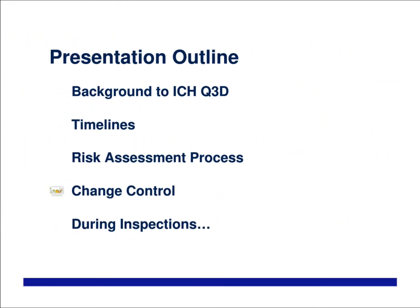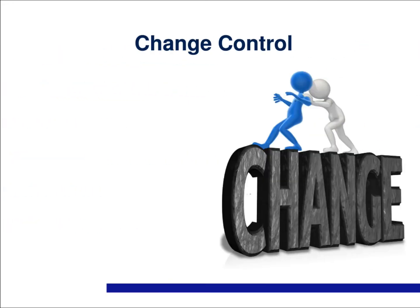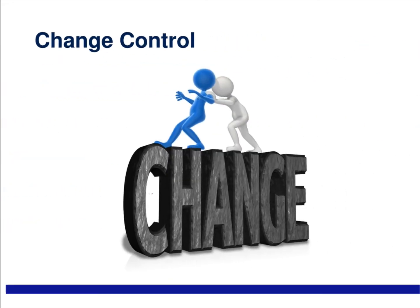We'll now look at change control. Once you've completed your risk assessments you need to consider the impact of any changes that you make — so that could be to excipients, synthetic routes, manufacturing plants, water systems, etc. You need to do this routinely as part of your change controls, and so it might be wise to build that into your quality system as a specific question to consider. What you want to avoid is pushing your process over the edge and into non-compliance.